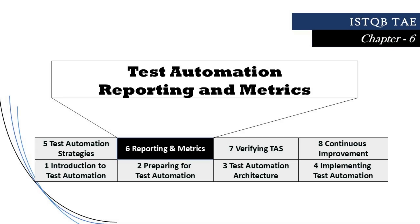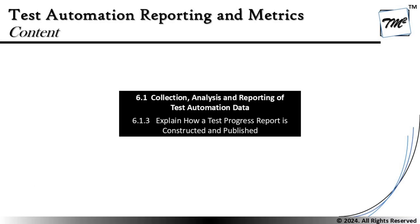Hello friends and greetings for the day. Welcome back to another tutorial on ISTQB Test Automation Engineer certification. We are in chapter 6 right now, talking about test automation reporting and matrices. As part of this, we are covering the final segment of 6.1, that is 6.1.3: explain how a test progress report is constructed and published.